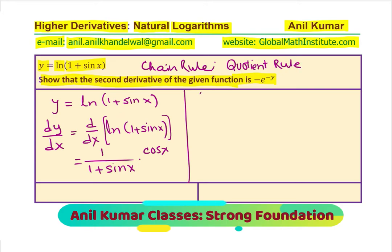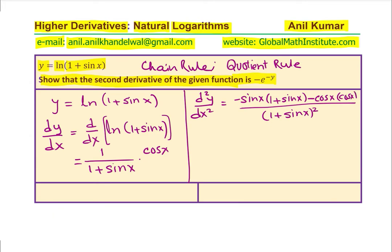Clear? So, we get d²y/dx² equals the denominator squared, which is (1 + sin x) whole square. Derivative of cos x is minus sin x times the denominator, which is 1 + sin x, minus cos x times derivative of 1 + sin x. We get cos x times cos x, which is derivative of sin x.